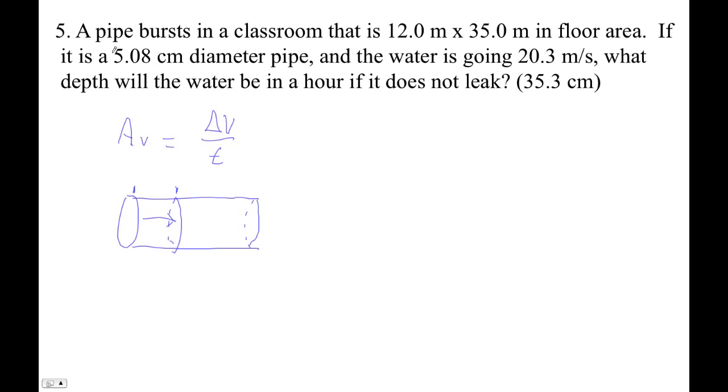Okay, so we've got this 2-inch pipe, 5.08 centimeter diameter pipe. Water is flowing 20.3 meters per second. That's a good clip. And then how much will it fill the classroom in?